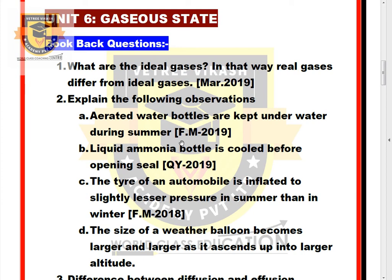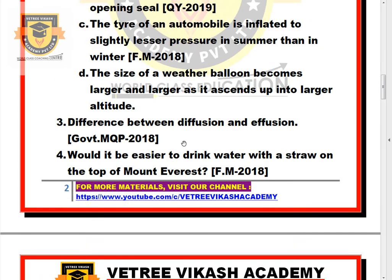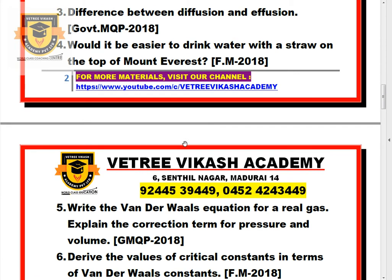C. The tire of an automobile is inflated to slightly lesser pressure in summer than in winter. D. The size of a weather balloon becomes larger and larger as it ascends up into higher altitude. Question 3: Difference between diffusion and effusion. Question 4: Would it be easier to drink water with a straw on the top of Mount Everest?